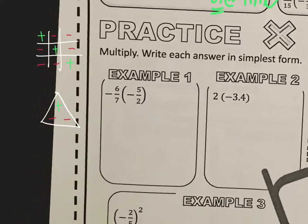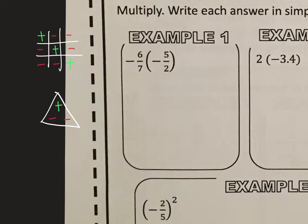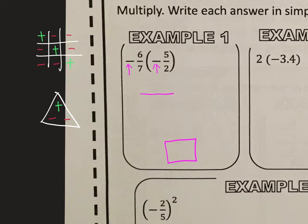Let's zoom in on example number one. We've got negative six sevenths times negative five halves. So our answer is going to be positive. I'm putting my answer box here — you don't put a sign in there for positive, only for negative. Six times five, we just multiply straight across the top: six times five is 30. Seven times two is 14. And both numbers are even, so here's an example of where those divisibility rules come in handy. If we divide them each by two, we would have 15 over seven. And seven is prime, so nothing else can go into that.